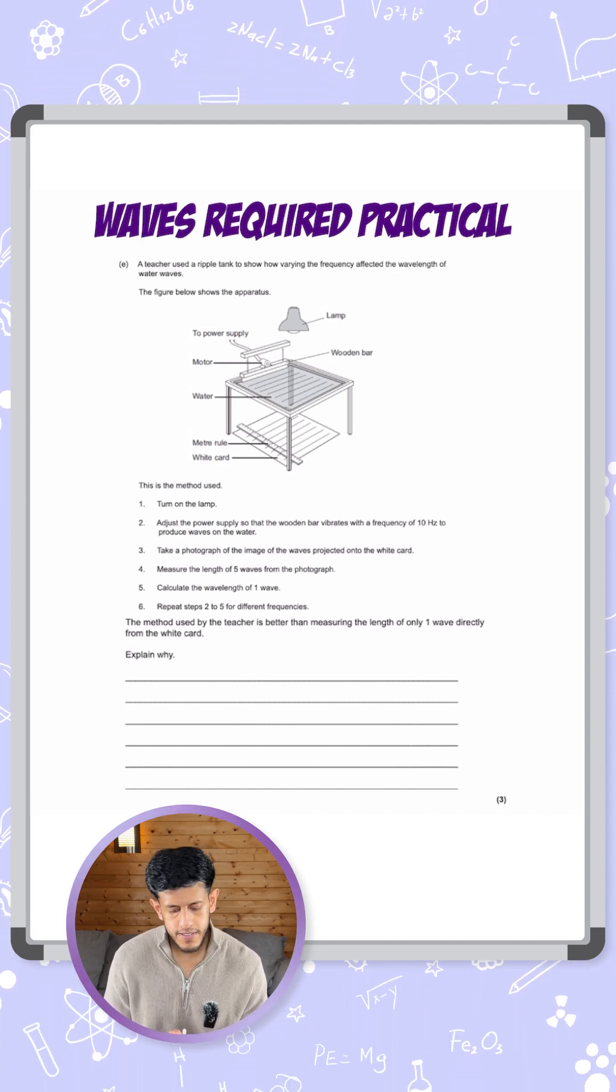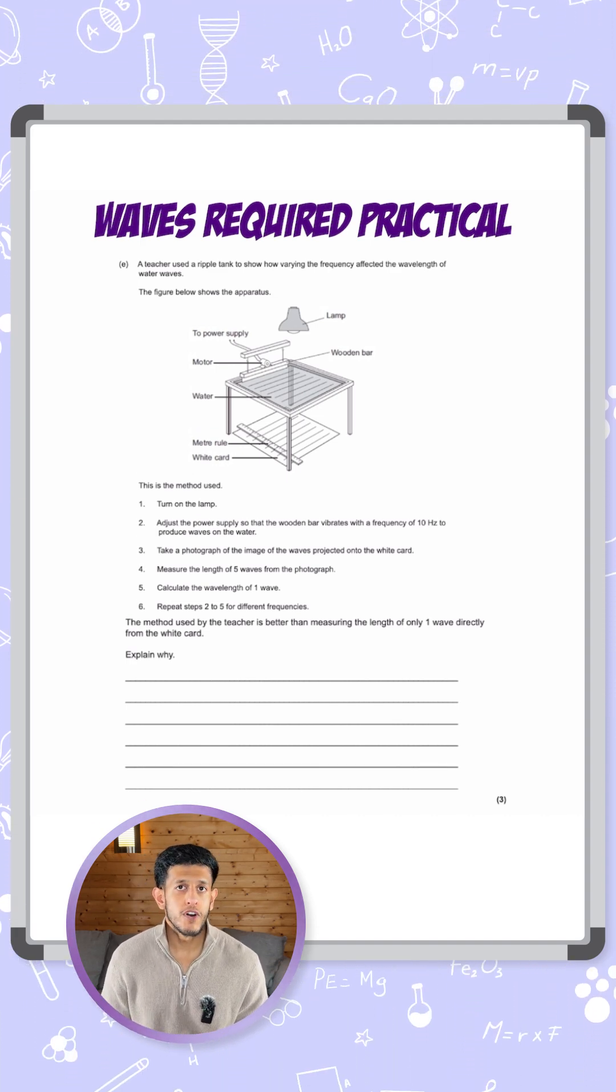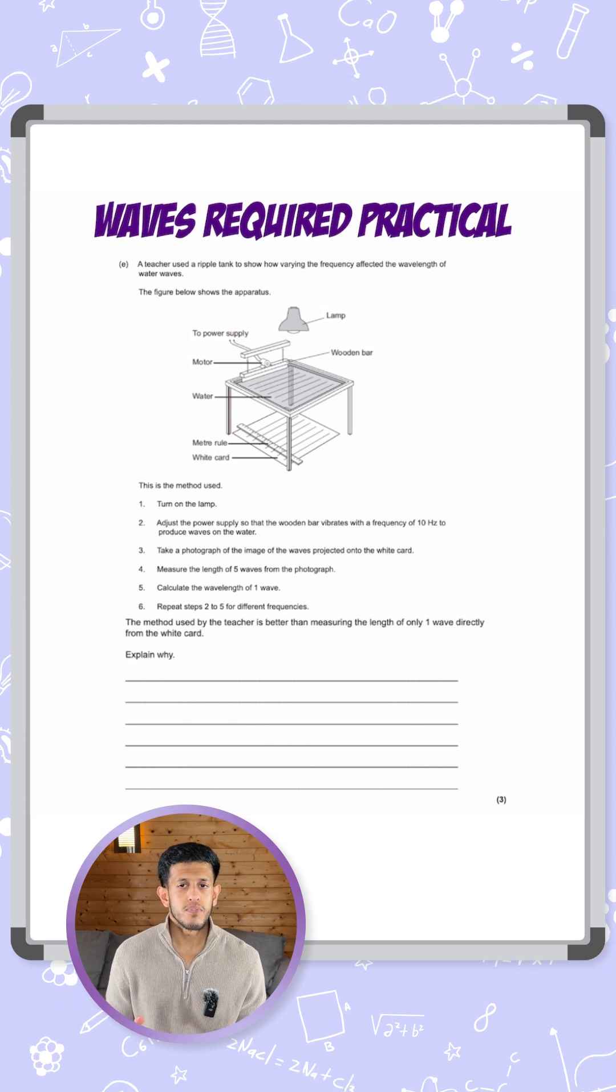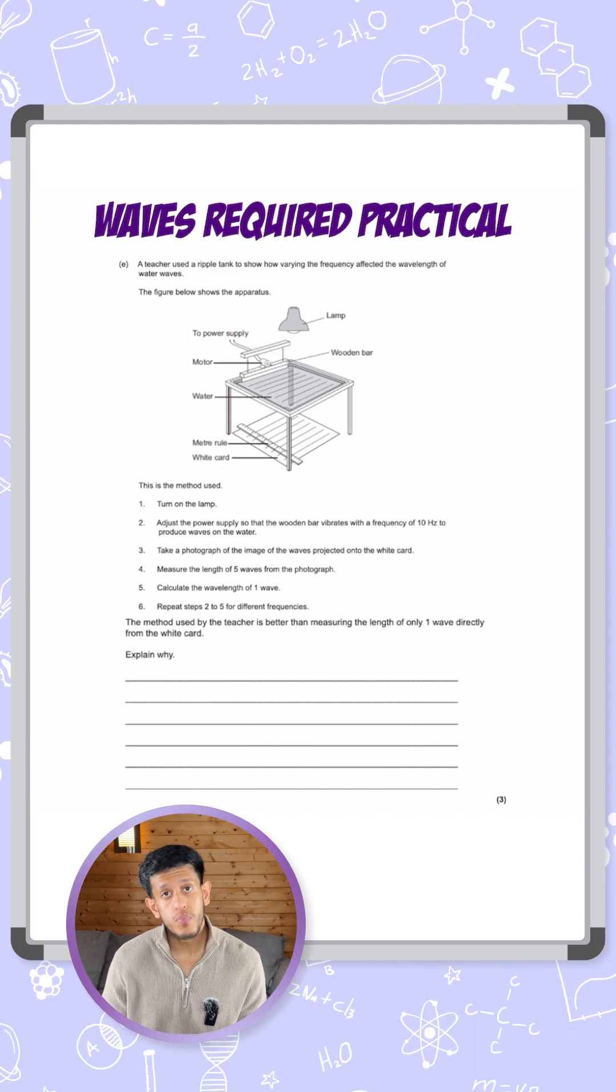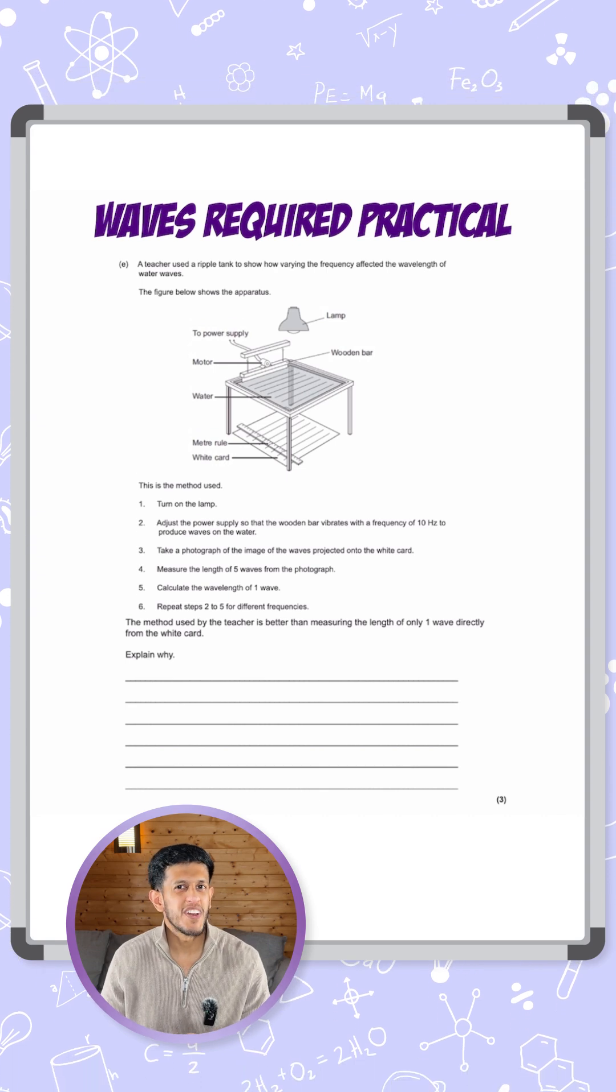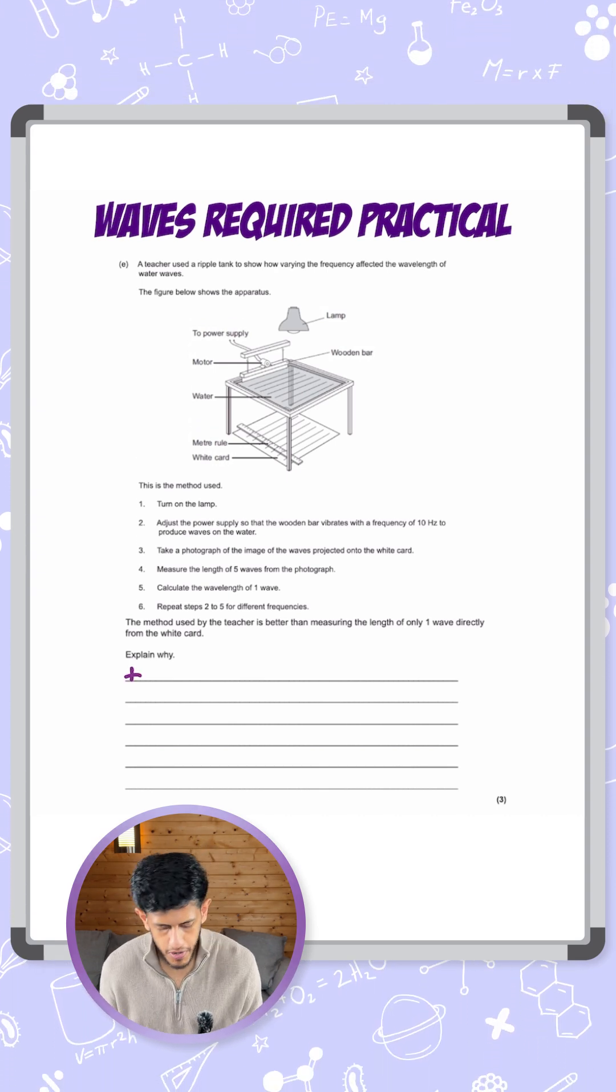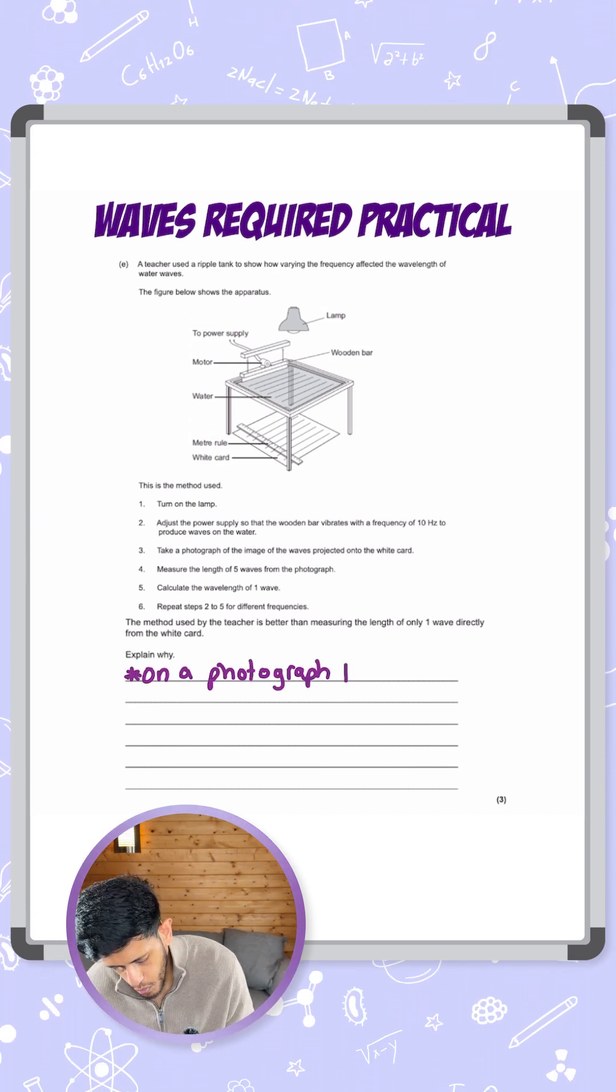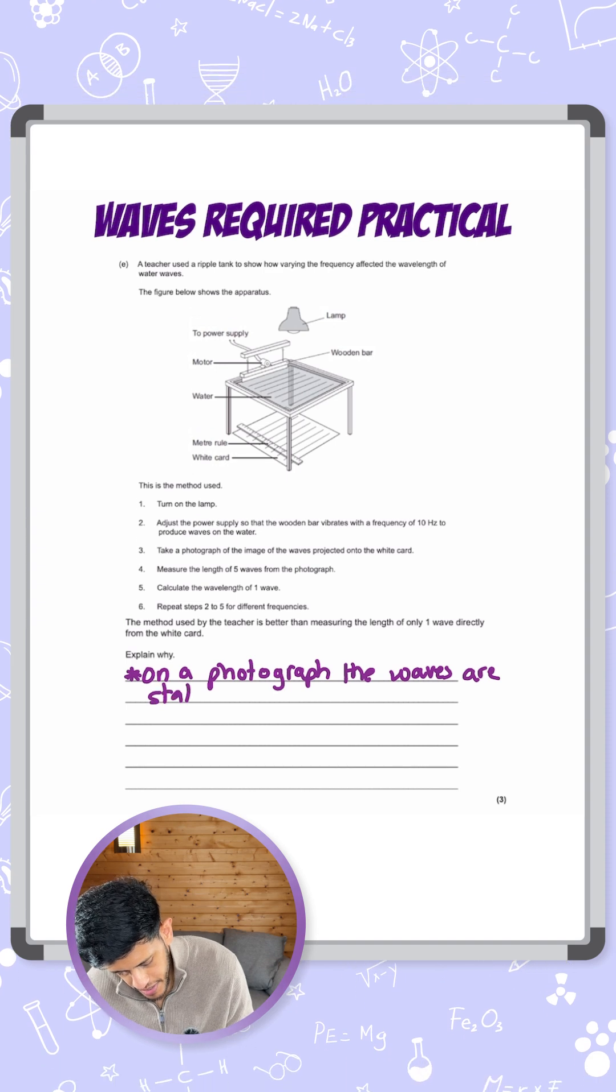For three marks we need three points. The first thing is by taking a photo it freezes the waves. If they tried to measure with a ruler on the card directly, the waves are going to keep moving so you'd never get it quite right. So for the first mark I'm going to say: on a photograph the waves are stationary.